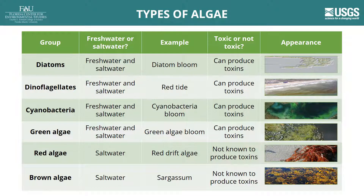Scientists estimate that there are hundreds of thousands of different algae species. This video will cover six major algae types: diatoms, dinoflagellates, cyanobacteria, green algae, red algae, and brown algae. These groups of algae differ in their appearance, where they grow, the production of toxins, and the formation of HABs.